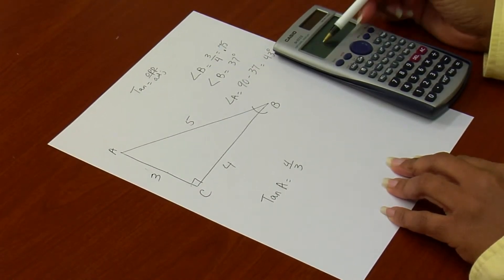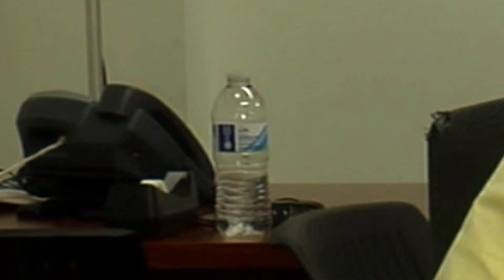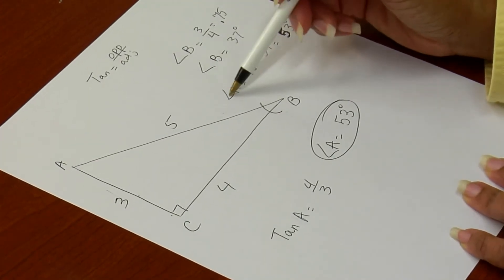And I'm rounding this to the nearest degree or nearest whole number. Because of this 1, I'm going to leave it as 53. So this, again, the second method for finding angle A.